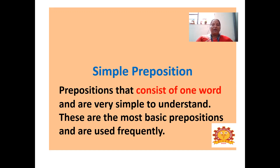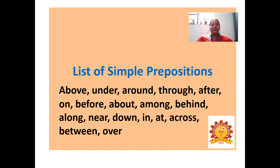The list of simple prepositions includes: above, under, around, through, after, on, before, about, among, behind, along, near, down, in, at, across, between, and over. These are the simple prepositions used by individuals very commonly and frequently.